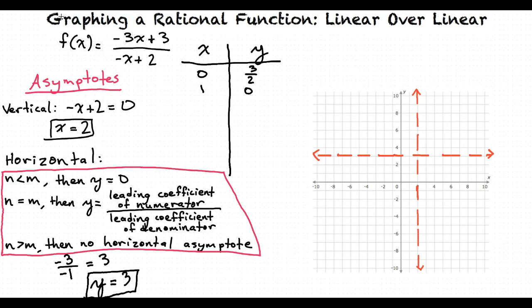Therefore, our y-intercept is 0, 3 halves. We'll plug in right here. And 1, 0 is our x-intercept, which goes right here. We see that both of these points are to the left of the vertical asymptote and under the horizontal asymptote. We can also see how the shape of this piece of the graph will look, something like that.